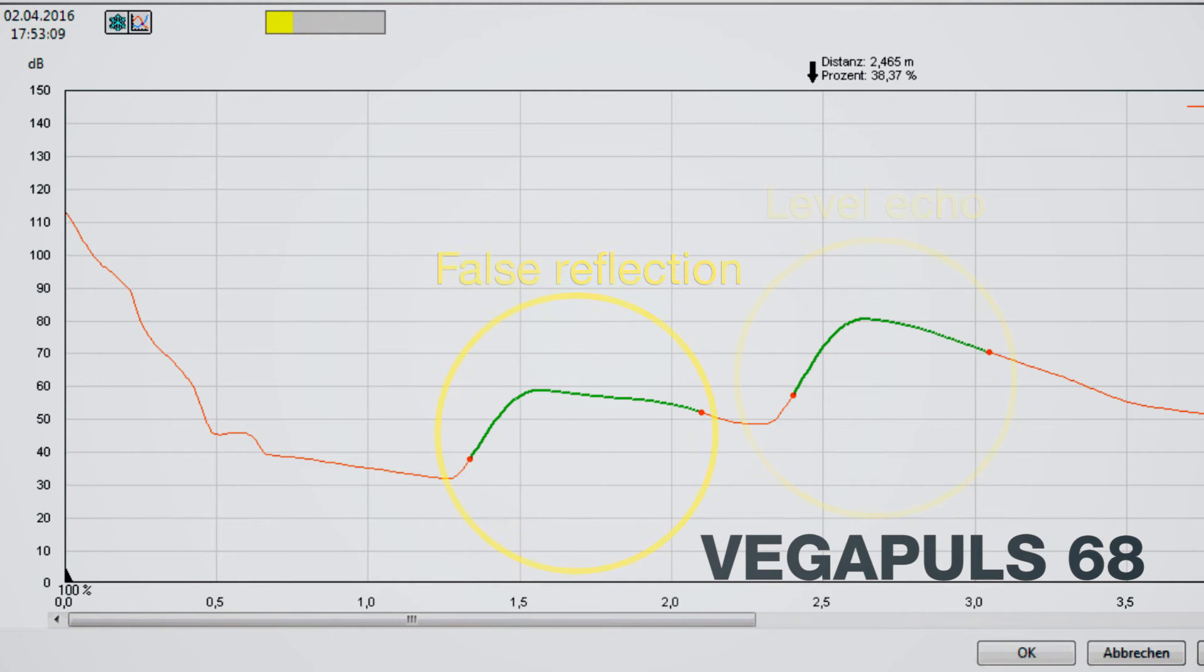At the moment, we have a false reflection which has approximately half the size of the reflection from the bottom. So still a reliable measurement is possible.